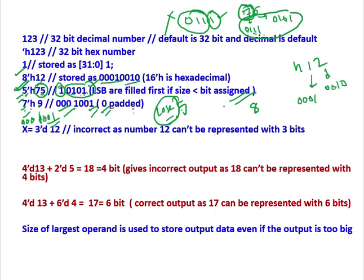Here x equal to 3'd12. 12 decimal is in binary 1100. So minimum we need 4 bit data, 4 bit binary values. But here it is written 3, size is 3. This is not possible. It is incorrect because with size 3 we cannot represent a 4 bit data. So it is incorrect.